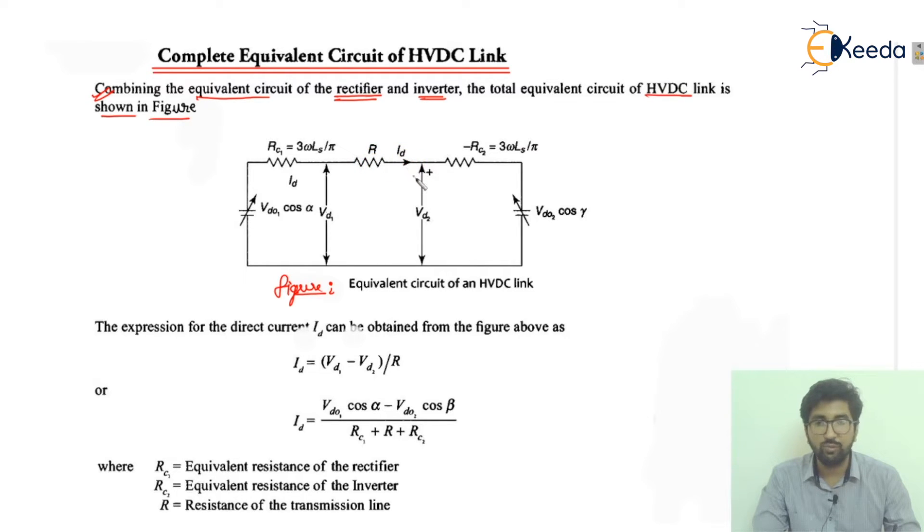In between them there will be resistance R and the ID is going to flow here. Look at this - this is the total voltage which is represented, that is VD1. It is representing the rectifier side and VD2 is representing the inverter side. This is a basic fundamental diagram which is connected in series.